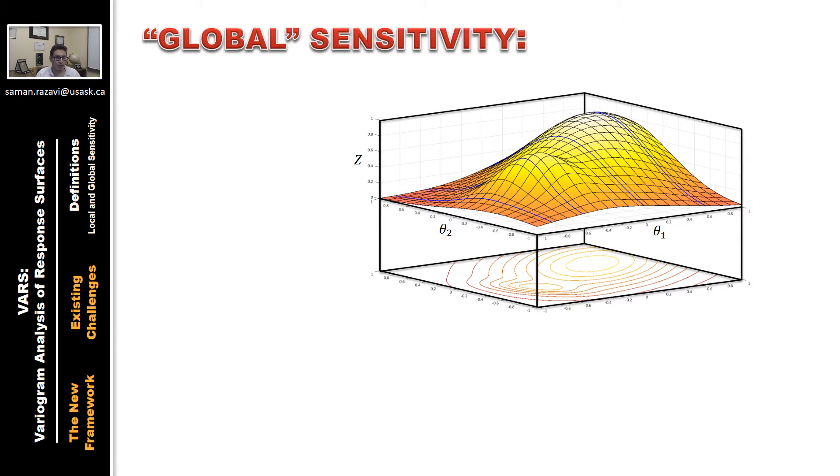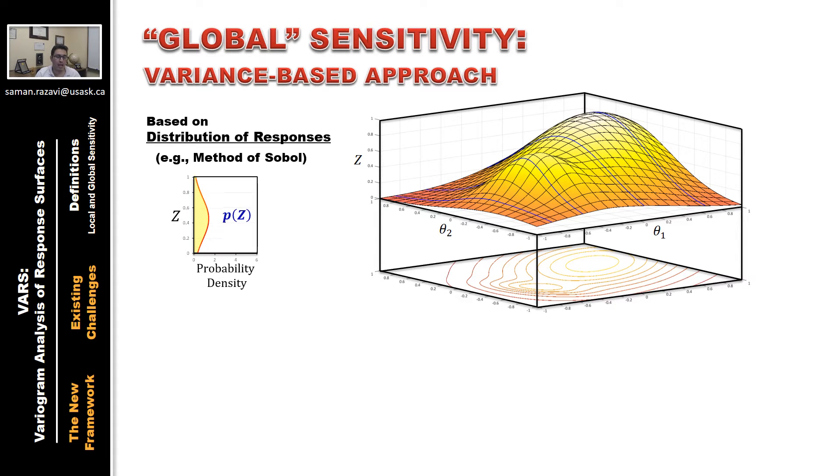The other very commonly used approach to describe global sensitivity is the variance-based approach. This approach recognizes that the model response values can be described by a probability distribution, having a variance. This variance basically represents the total uncertainty in model response. The idea is to apportion this total variance or total uncertainty to each individual parameter.